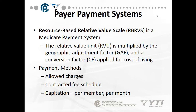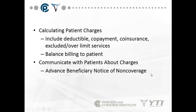Payment methods include allowed charges and contracted fee schedules. Private insurances typically contract with a clinic or hospital for a two-year period then renegotiate. Capitation per member per month means, for your HMO plan, you may only spend up to $1,000 a month at the doctor's office. This is where preventive health care comes in — teaching patients how to manage their health, such as ensuring asthma patients have medications and avoid triggers, to reduce unnecessary office visits. This is called preventive health maintenance.